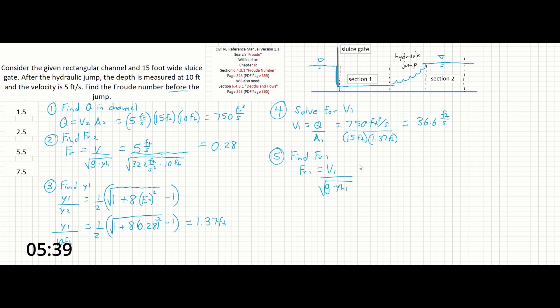So 36.6 feet per second over the square root of 32.2 feet per second squared times 1.37 feet. And if we solve that, we should get a Froude number before the jump of 5.5.